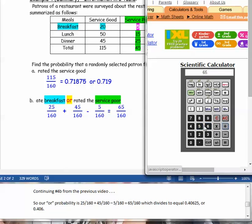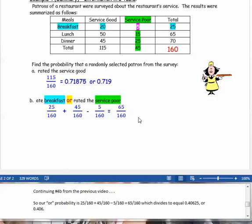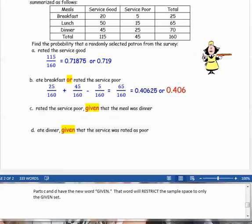That gives us 65 out of 160, which divides to 65 divided by 160 is 0.40625, rounded to 0.406. Part c and d have our new word given - conditional probability. That word will restrict the sample space to only the given set.